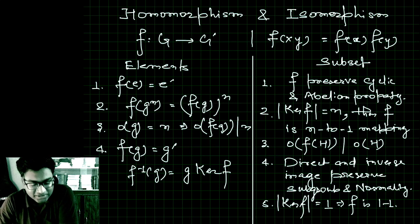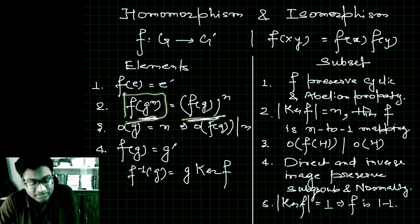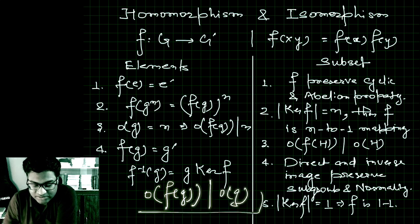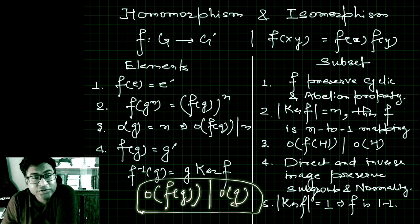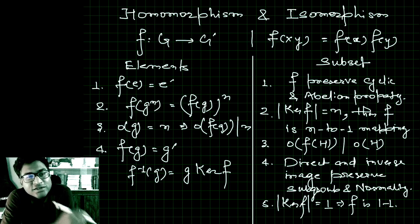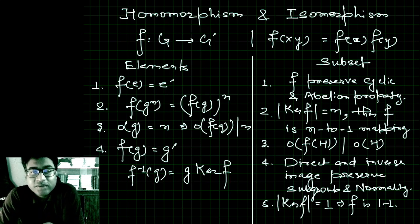The second property is that f(g^n) = f(g)^n. This property is very important: the order of the image of g will divide the order of g. So if you have an element of order n, then the only possible images will be elements whose orders are factors of n.